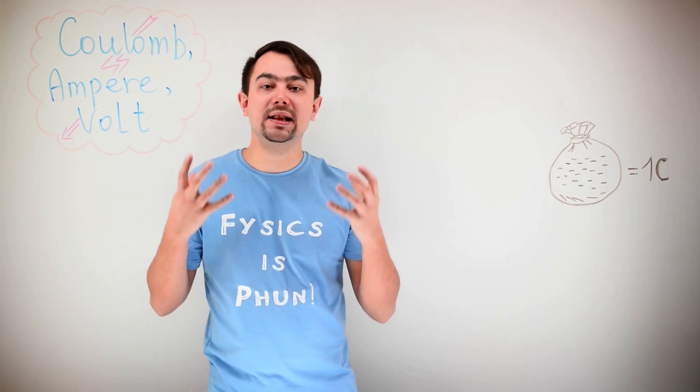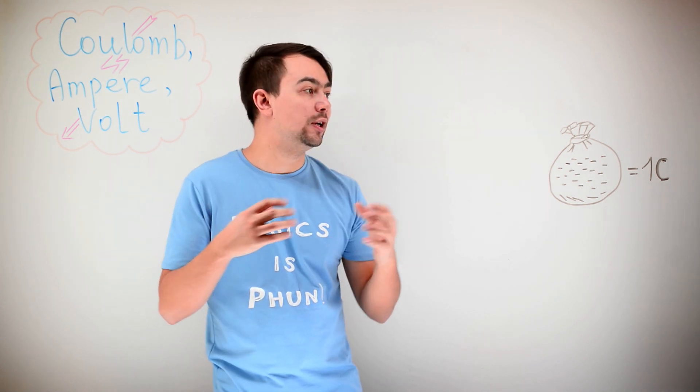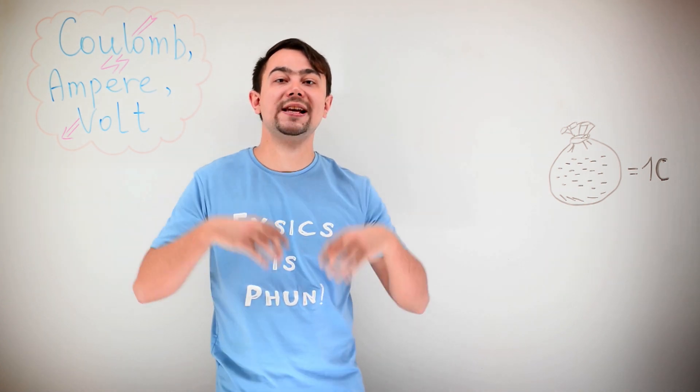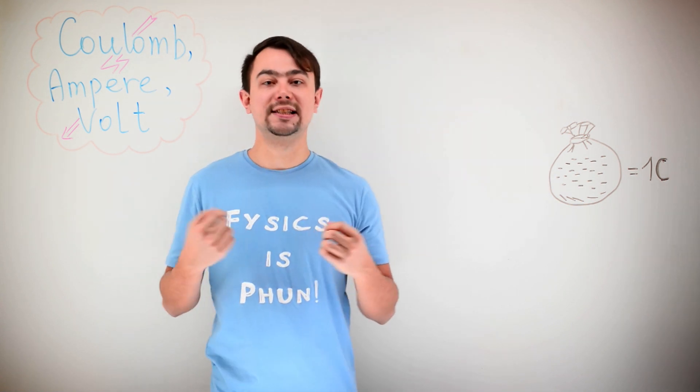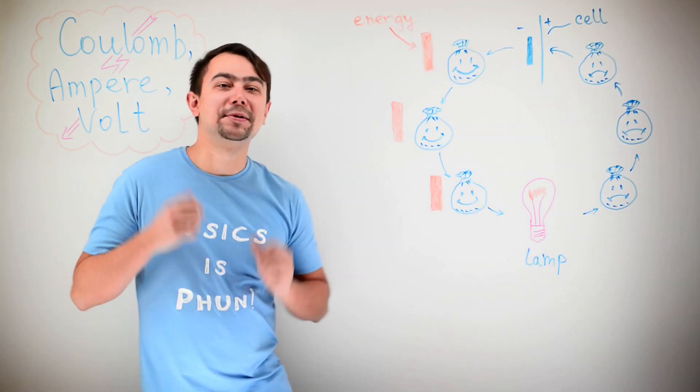When electrons are moving in a certain direction, we call it electric current. To understand an electric current, let's build a simple circuit.